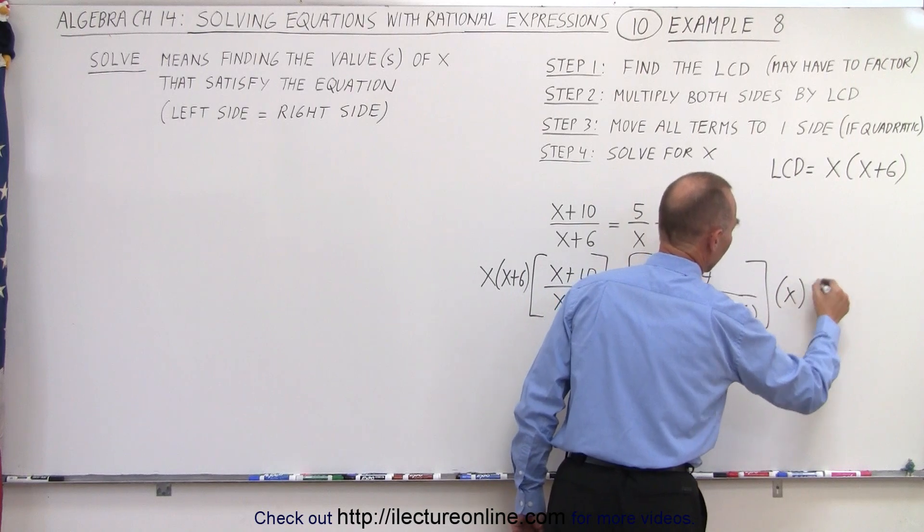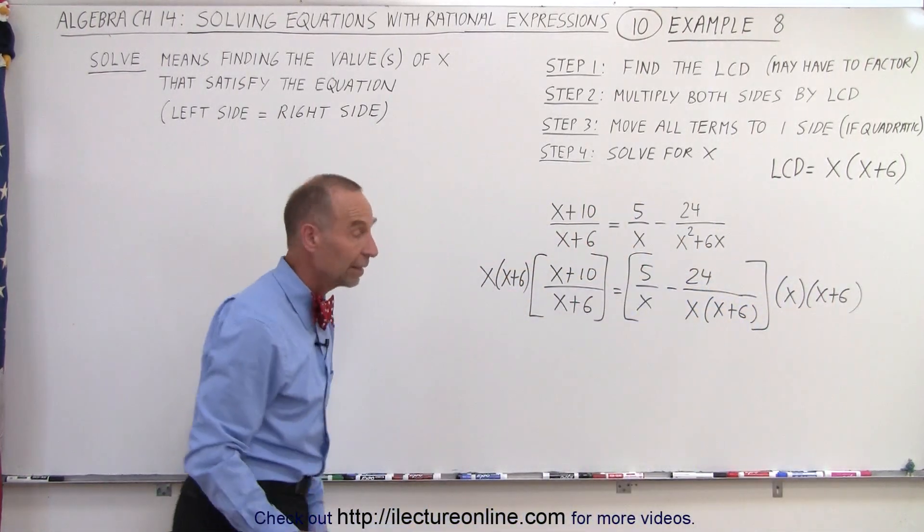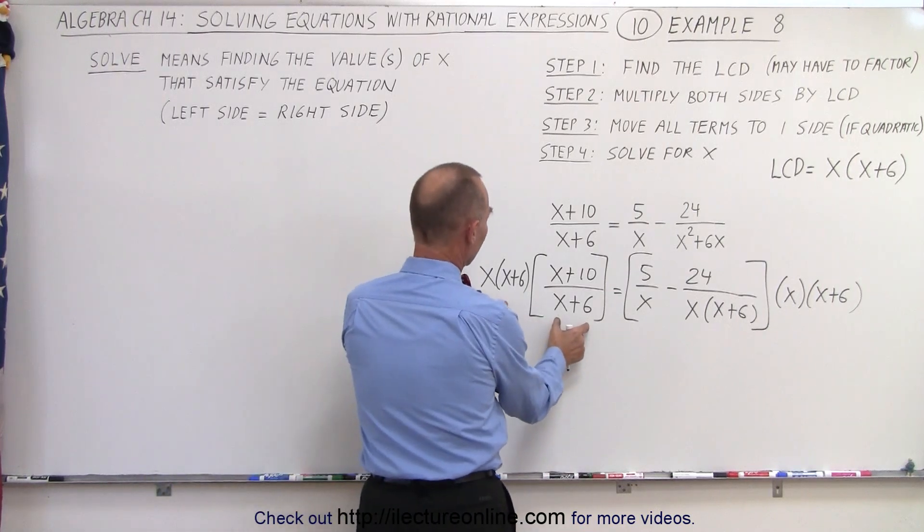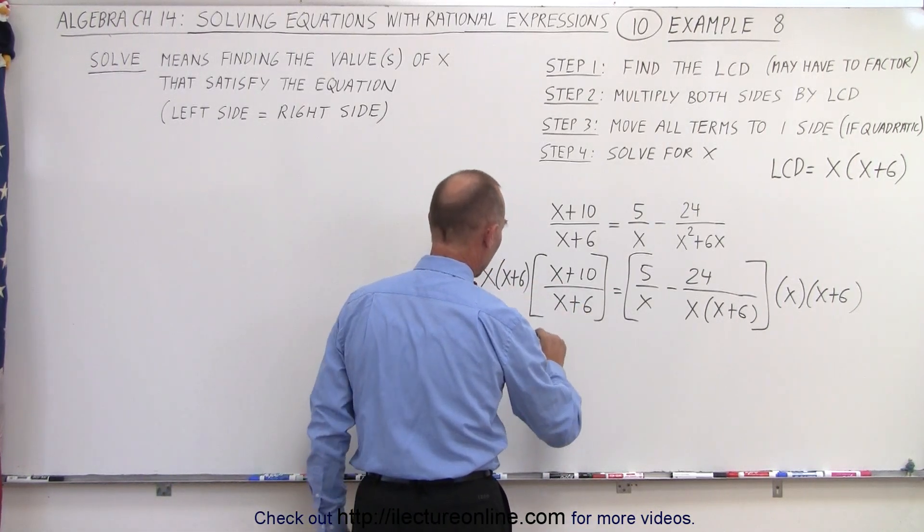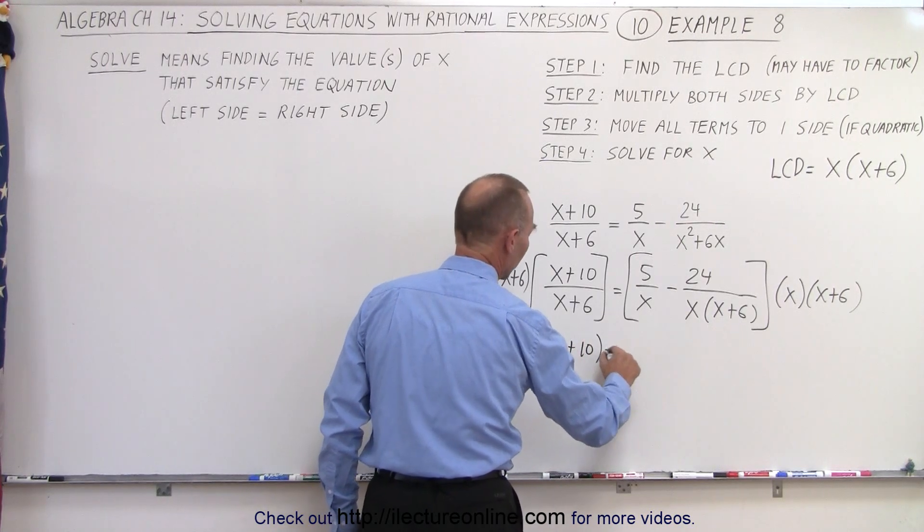Let's do that now. First, when we multiply these two together, notice the (x+6) will cancel out and you're left with x times (x+10) over here.